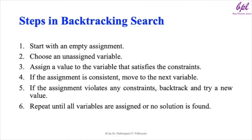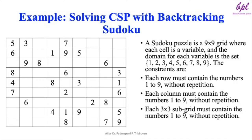Let us look at an example of how backtracking search works using a simple 9x9 Sudoku grid. Each cell of the grid is a variable and the domain of each variable is the set of numbers 1 to 9. The constraints are: each row must contain the numbers 1 to 9 without repetition, each column must contain the numbers 1 to 9 without repetition, and each 3x3 subgrid must contain the numbers 1 to 9 without repetition.